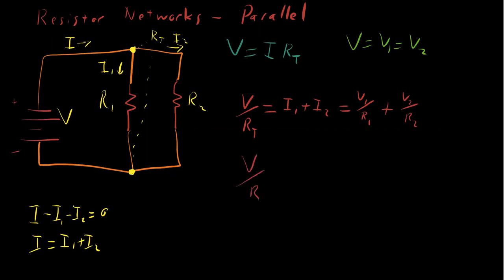And so we can then rewrite this one more time and say that V over RT is equal to V, not V1, just V, over R1 plus V over R2.